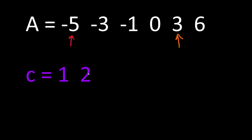Then we compare the absolute value of minus 5, which is 5, with 3. The number 5 is greater in this case, and for this we are going to shift our interest to the element that comes right after the minus 5 element.